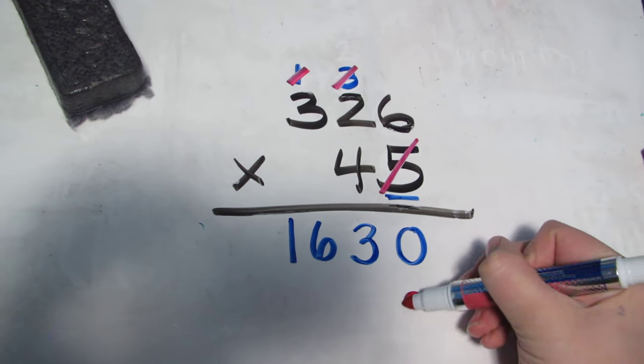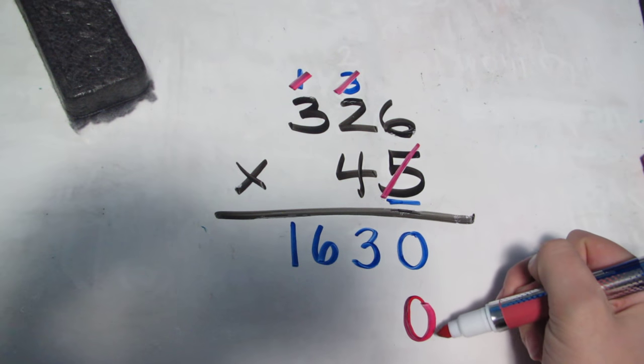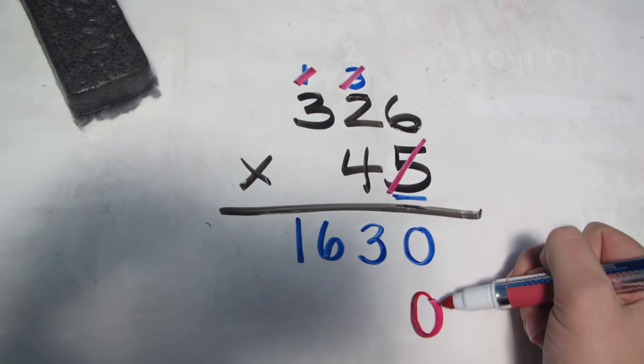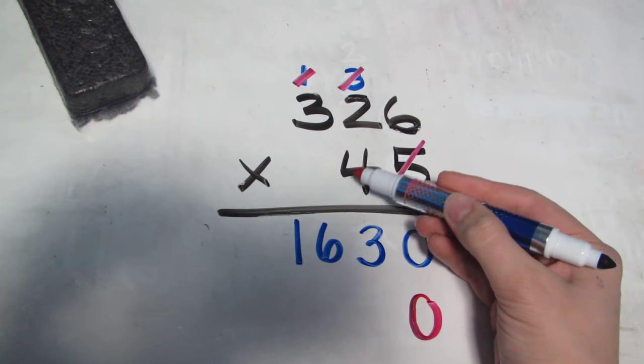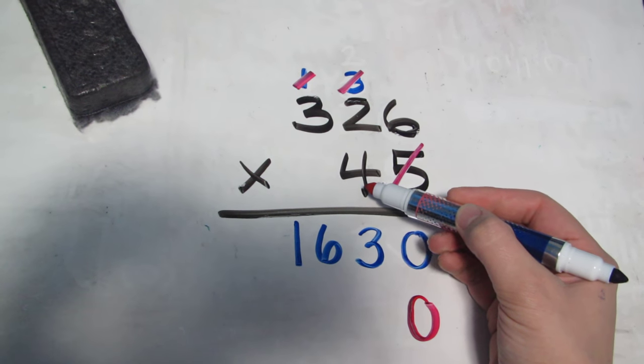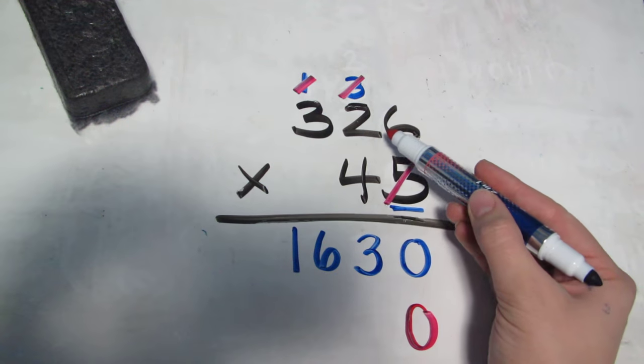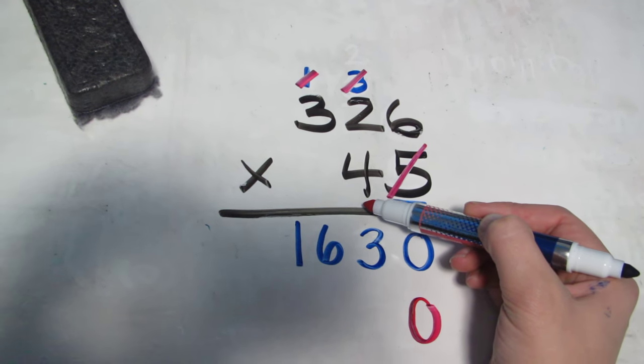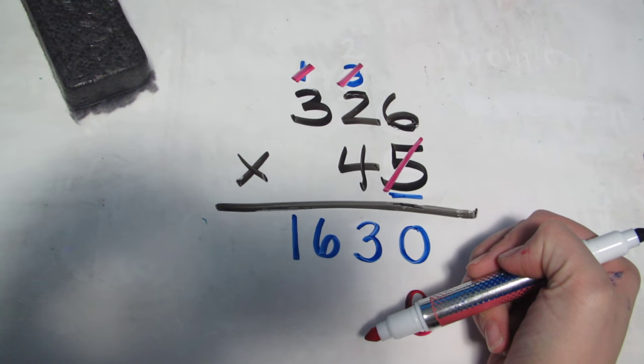So I also have to add a 0 at the bottom over here because that means I've changed places. I'm not working with the ones anymore. I'm working with the tens. That's where the 4 comes in. So now we're doing 326 times 40 because the 4 is in the tens place. So here we go with this one.